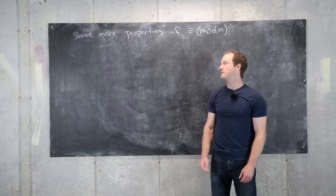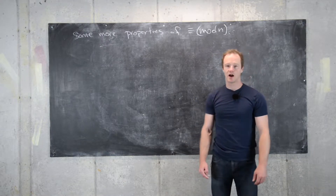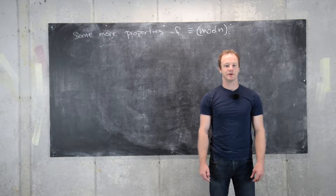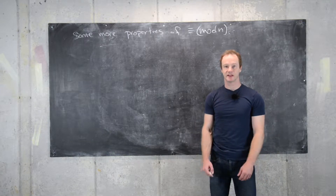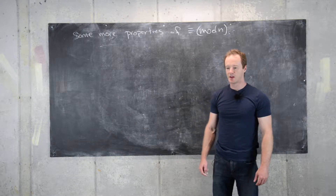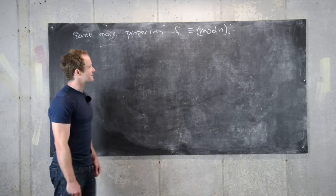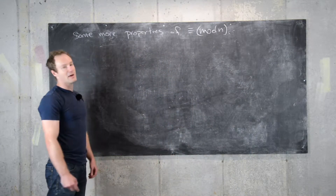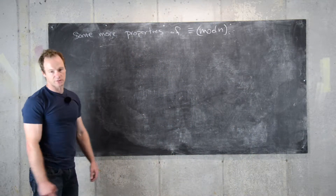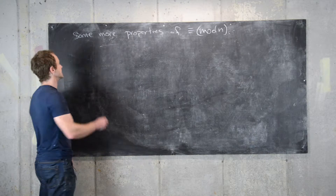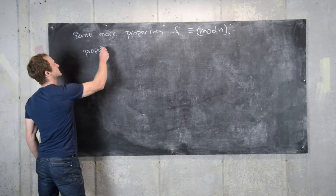In this video we're going to look at some final properties of congruence modulo n before doing some videos on some examples. The first one is some arithmetic properties of congruence modulo n. We'll write this as a proposition.